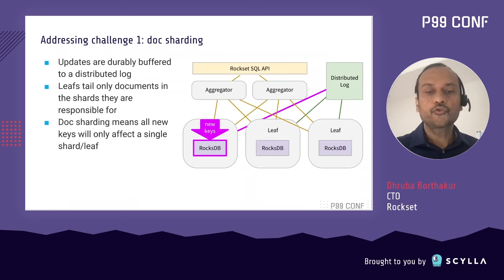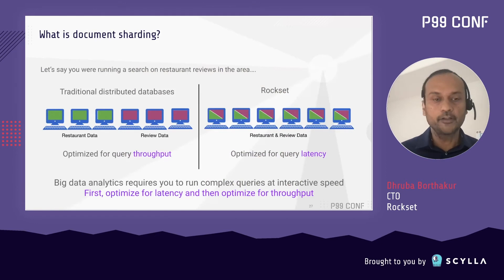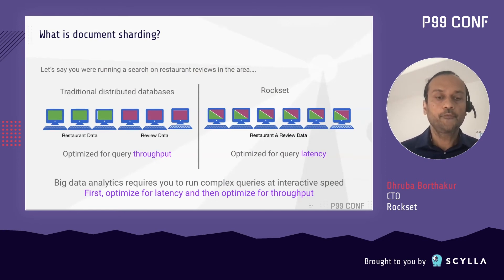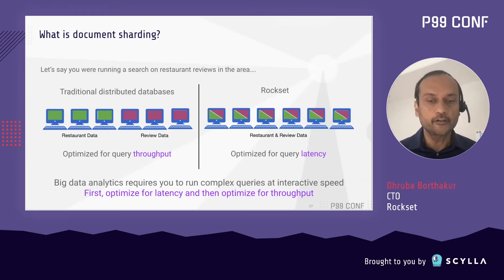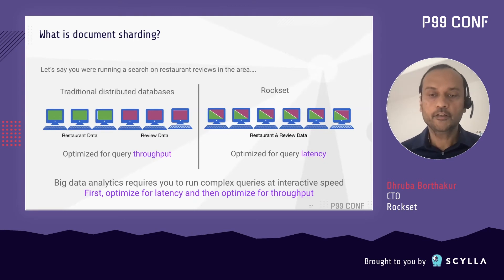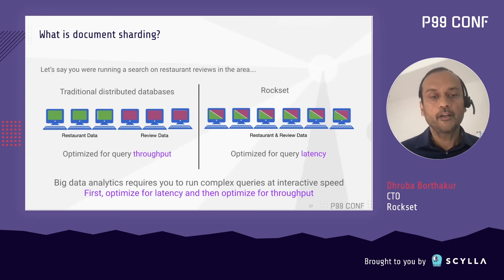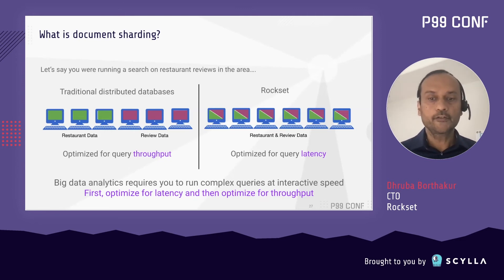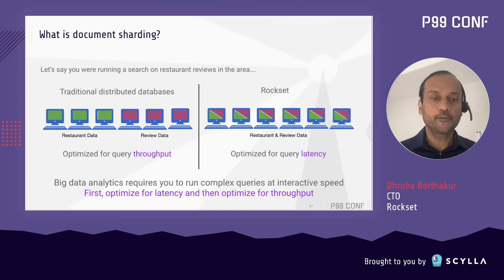Another way to look at doc sharding: in a traditional distributed database, data is term sharded. If you have a record with restaurant data and review data, only half the machines will have restaurant data and the other half review data. That's great for throughput if your queries operate on one partition. Whereas in Rockset, all the data is spread out in a scatter-gather mechanism among all the machines. When a query comes, it can leverage the CPU on all six machines to process that single query, rather than being limited to the subset of machines holding a specific partition. Rockset is optimized for query latency — it's a scatter-gather search-style database.